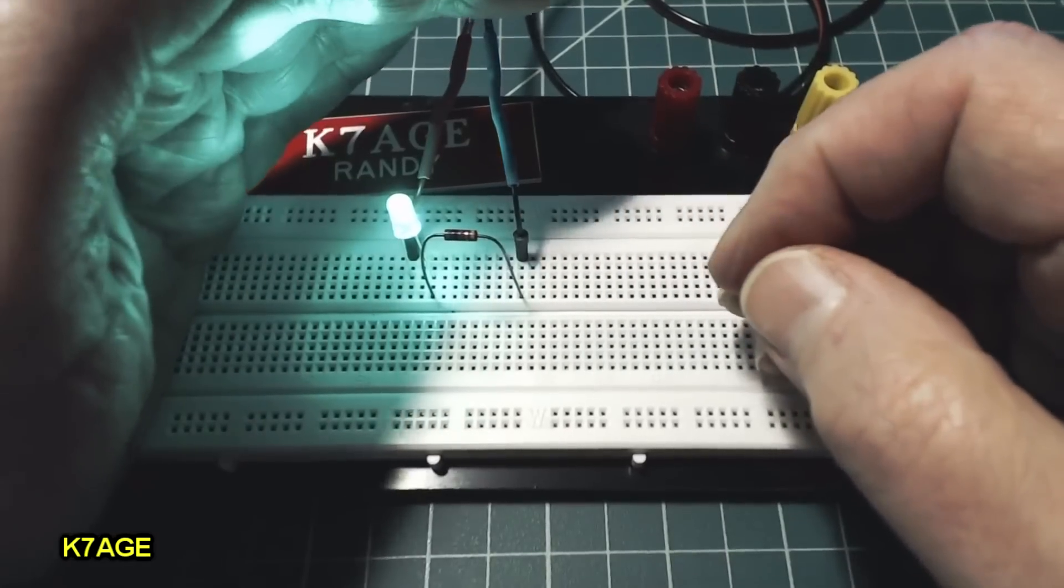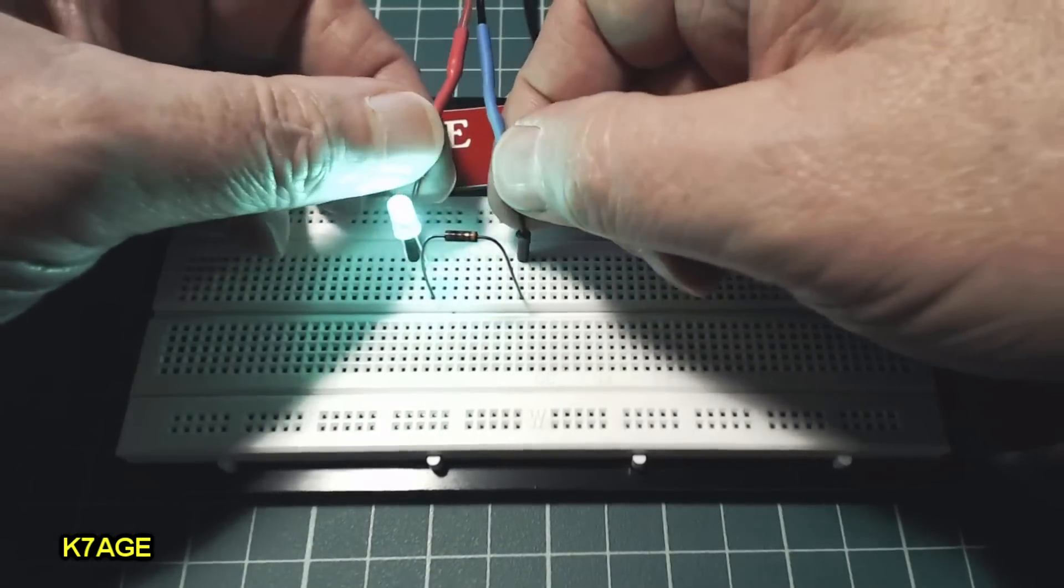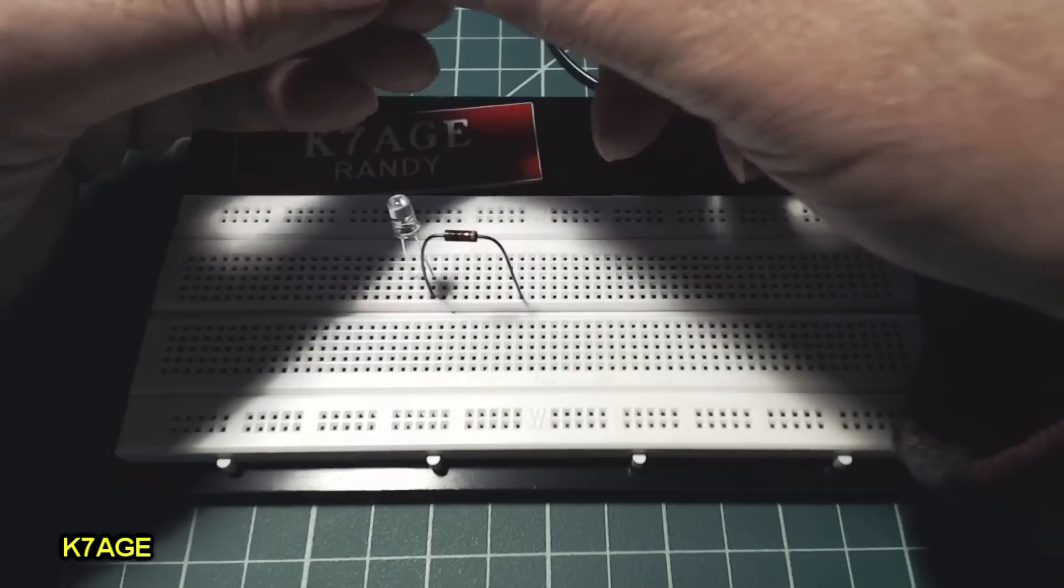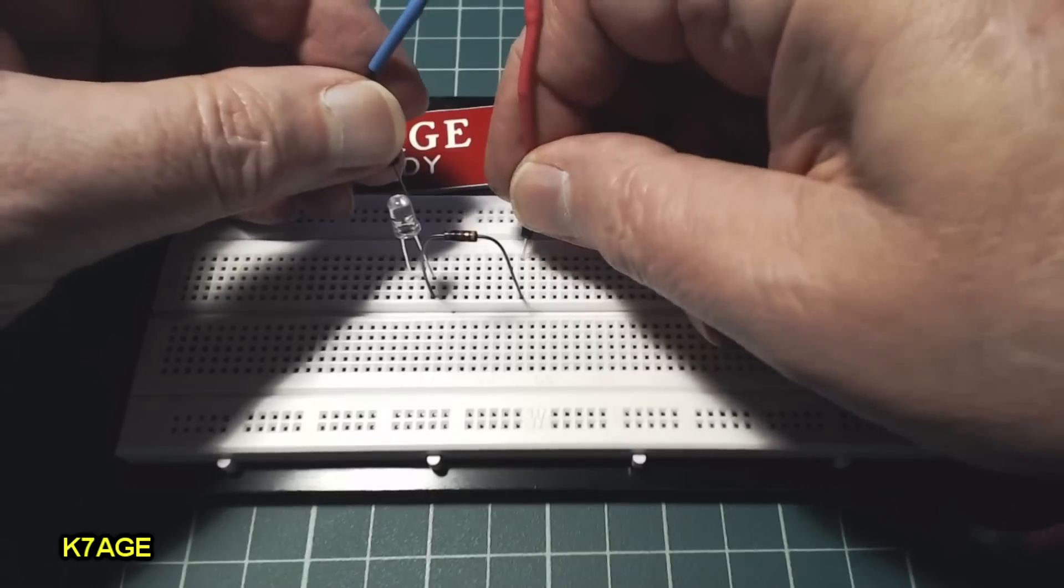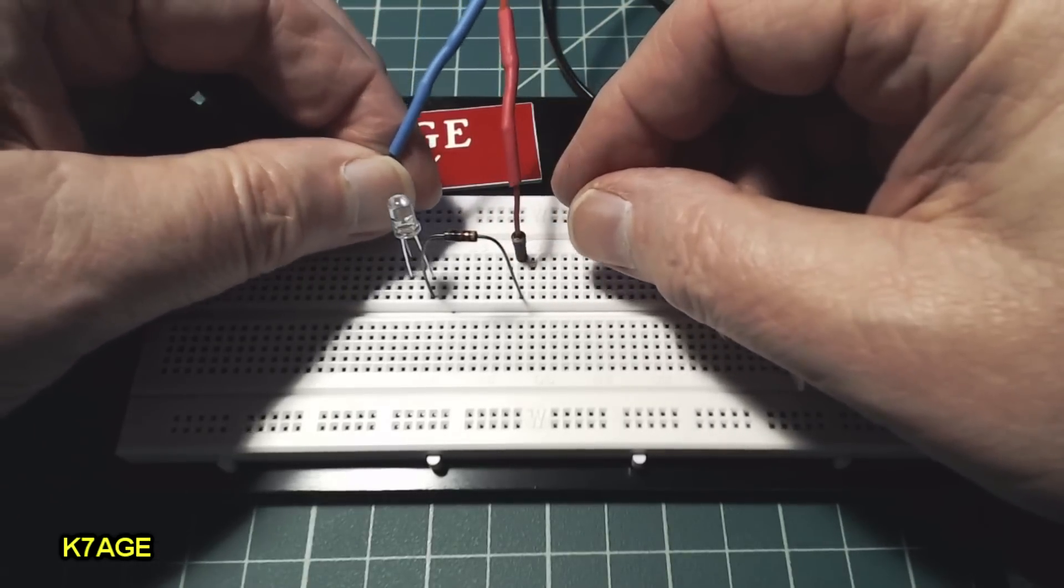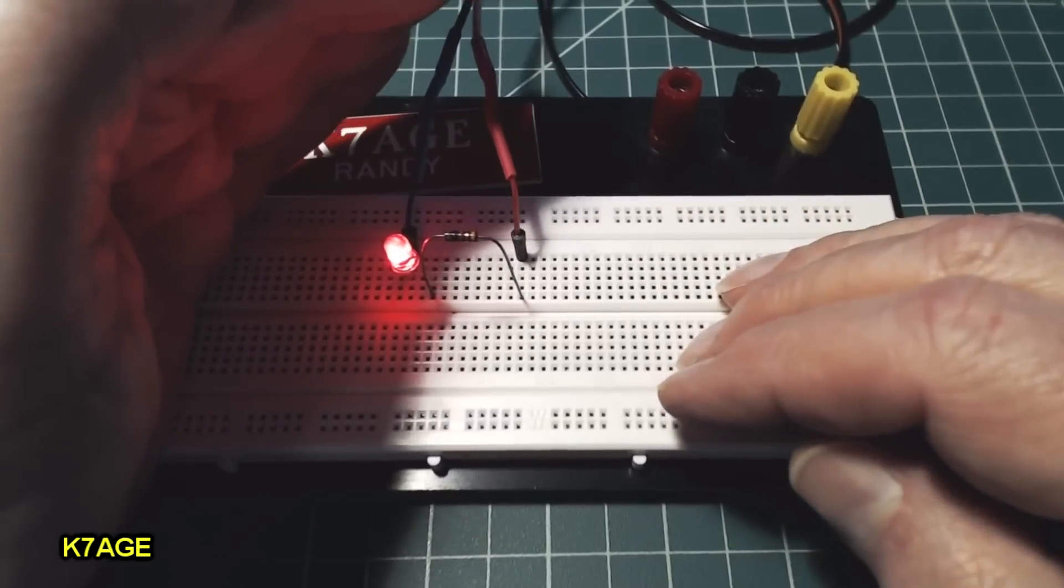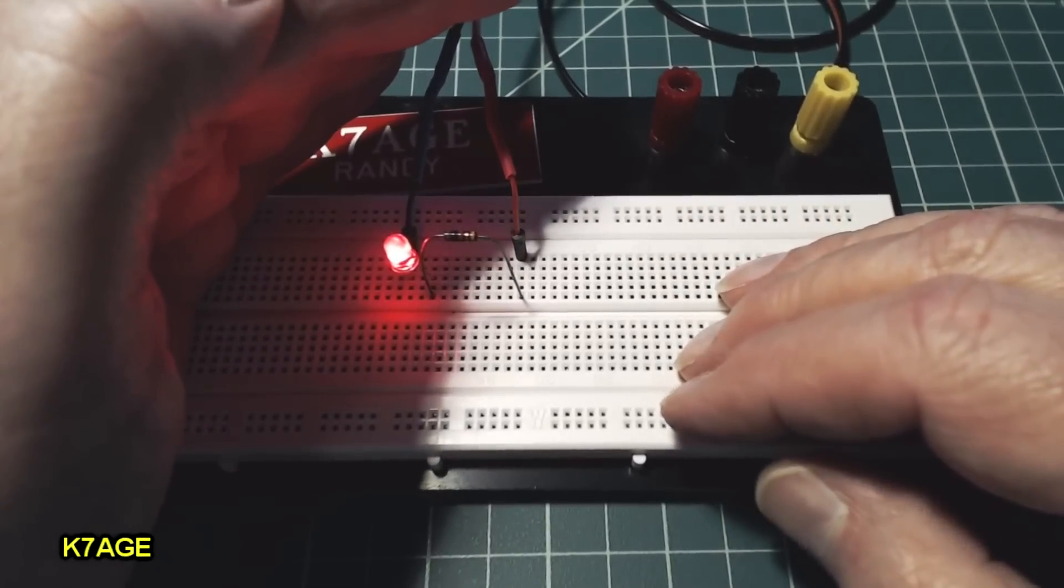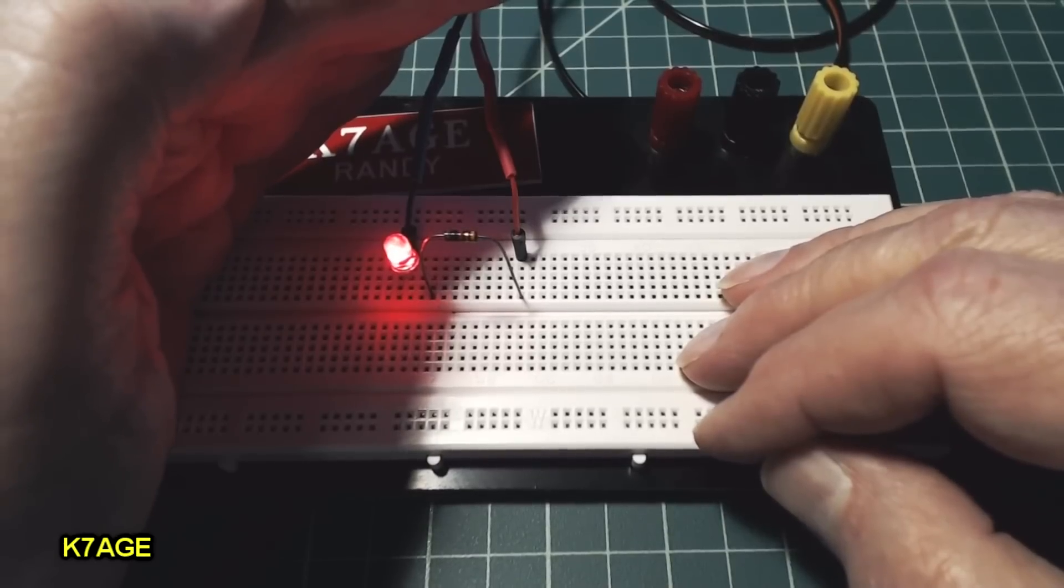And you can see that's lit up green. And if the power polarity was reversed, I'm going to switch the leads here, put the plus on the resistor end and the negative on the LED end. You can see it lights up red. So if it's green, it means we're good to go. If it's red, don't plug your radio in.